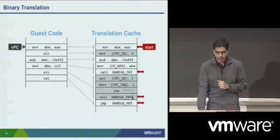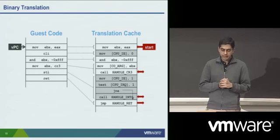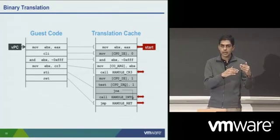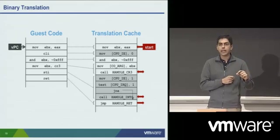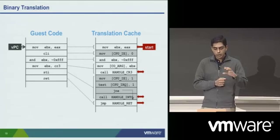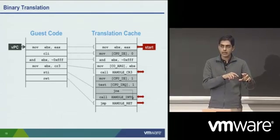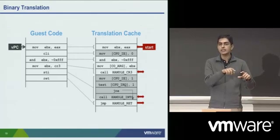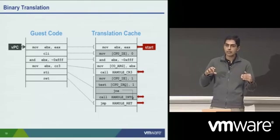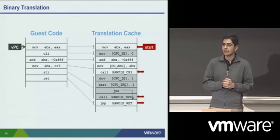There are several issues with even the trap and emulate model, which leads to another alternative called binary translation. The idea is that you would look at the virtual machine's currently executing set of instructions and specifically a basic block — a block of straight-line instructions that ends with a control flow instruction. When you inspect that basic block, you basically try to translate each instruction one by one: non-sensitive instructions are translated identically (called ident translations), and sensitive instructions are translated to either their emulated instruction sequence or to a call to an emulation routine if the emulation is very sophisticated.